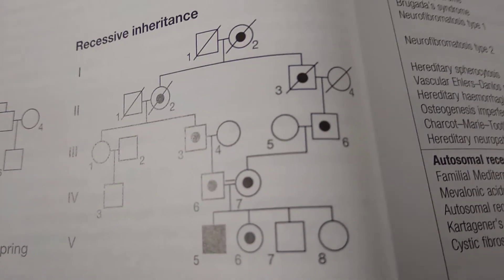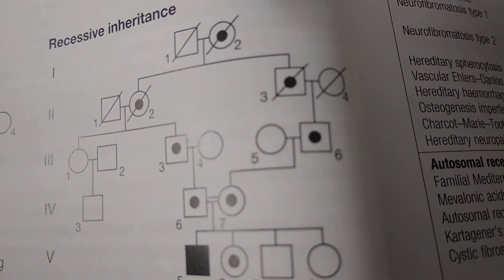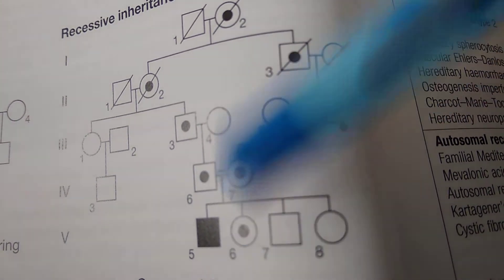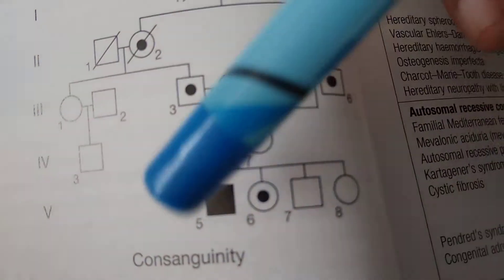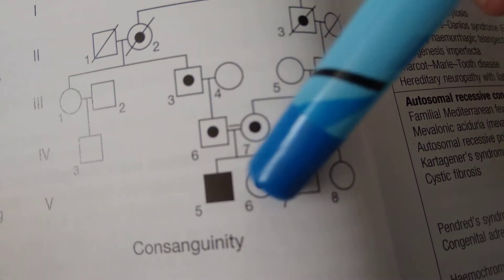Now look at the recessive pattern. In recessive, there are carriers, right? And only when two carriers are coming together are you able to see here. Only when two carriers are coming together, not all children, but one of the child is completely affected, clinically affected.